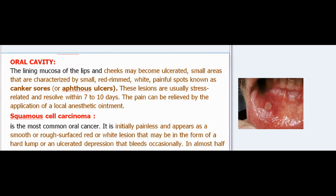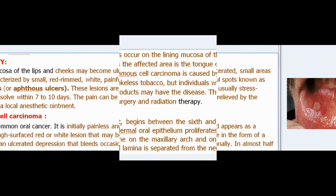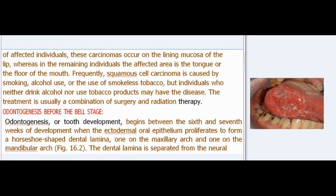Squamous cell carcinoma is the most common oral cancer. It is initially painless and appears as a smooth or rough-surfaced red or white lesion that may be in the form of a hard lump or an ulcerated depression that bleeds occasionally. In almost half of affected individuals, these carcinomas occur on the lining mucosa of the lip, whereas in the remaining individuals the affected area is the tongue or the floor of the mouth.